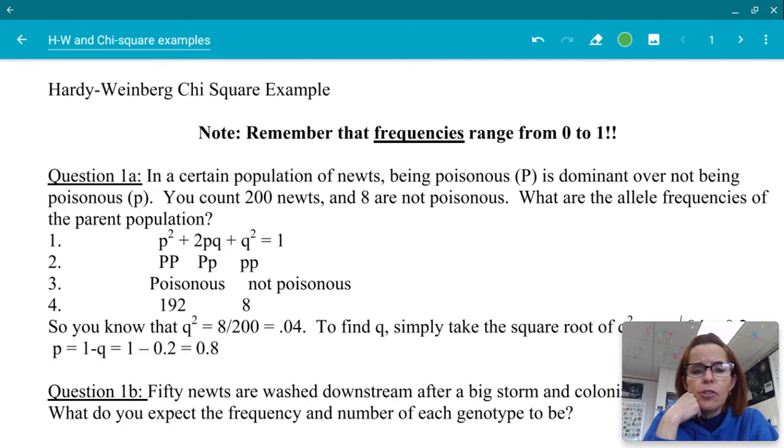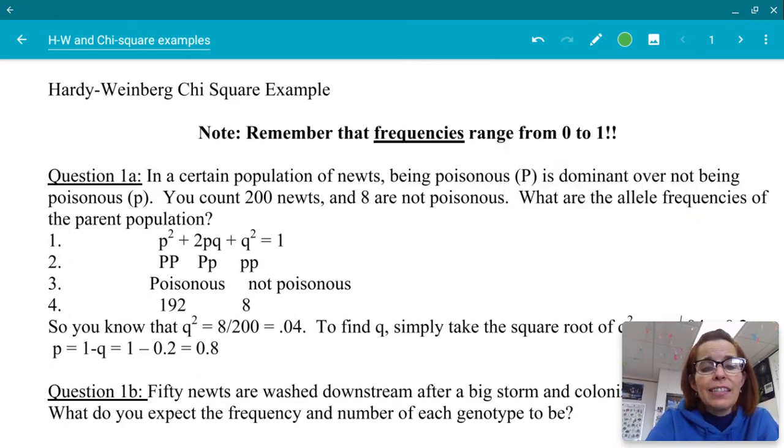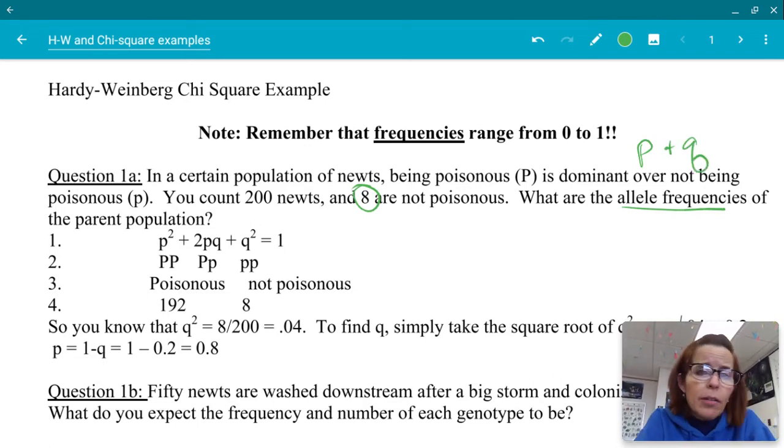Okay, so let's go ahead and get started. It says, question 1A, in a certain population of newts, newts are really cool, like brightly colored salamander dudes. They're really neat. And they tend to be poisonous. So being poisonous in this example is dominant over not being poisonous. And you count 200 newts and 8 of them are not poisonous. So that 8 of them that are not poisonous, that means those are the homozygous recessives. That's the only way that they could be not poisonous. So it says, what are the allele frequencies of the parent population? So when they say allele frequency, they are asking you for P and Q, not P squared, not 2PQ, not Q squared. Just how common are the different alleles in this population?